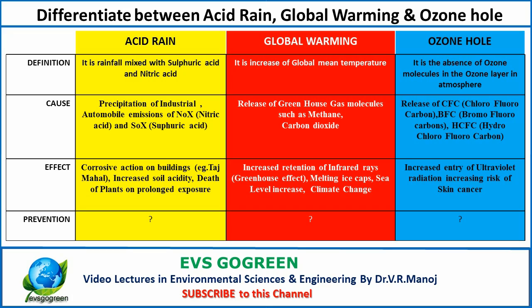Acid rain can create corrosive actions on buildings such as the Taj Mahal, deface statues, and cause increased soil acidity because prolonged exposure to acid rain will turn the soil acidic. There is also the death of plants on prolonged exposure. For global warming, increased retention of infrared radiation is the main effect, also known as the greenhouse effect.